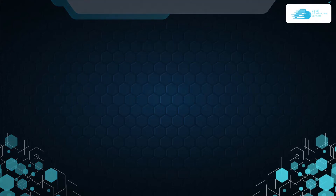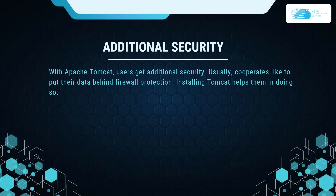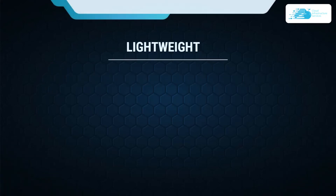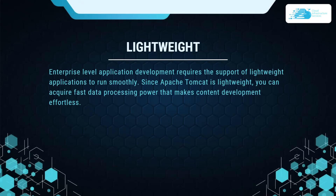Other than that, it has additional security. With Apache Tomcat, users get additional security. Corporates usually like to put their data behind firewall protection, and that is why installing Tomcat helps them in securing their data. Other than that, it is highly lightweight. Enterprise level application development requires the support of lightweight applications to run smoothly, and since Apache Tomcat is lightweight, you can acquire fast data processing power that makes content development more efficient.